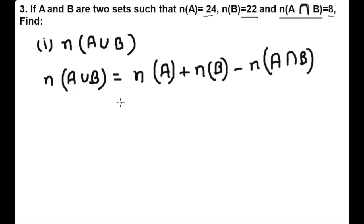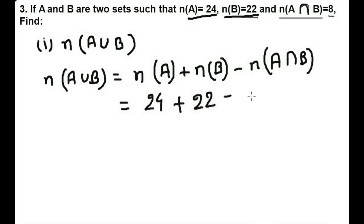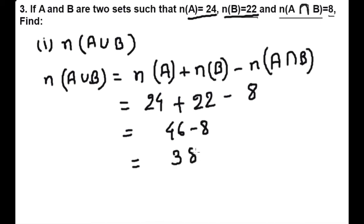So we have the number of elements of A is equal to 24, the number of elements of B is equal to 22, and the number of elements of A intersection B is 8. So here it is 46 minus 8, which is 38. Therefore, the number of elements of A union B is equal to 38.